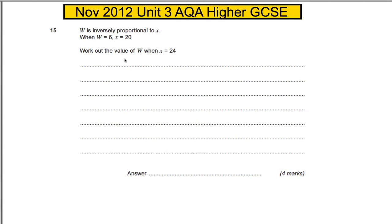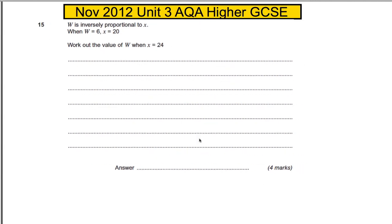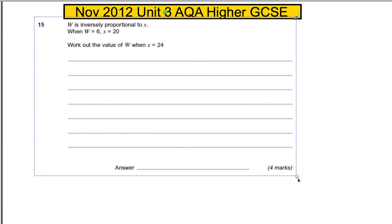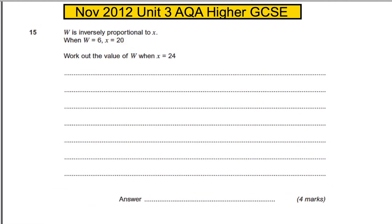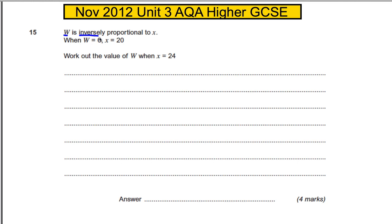Question 15 is a proportion question — when these come up, you've just got to be happy, they are easy. We are told W is inversely proportional to X, so because of that we can write W is equal to K divided by X. We're also told that W is 6 when X is 20.